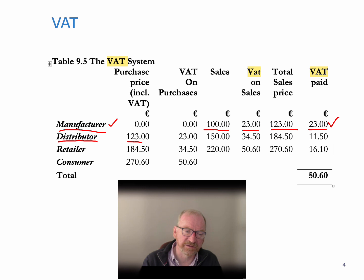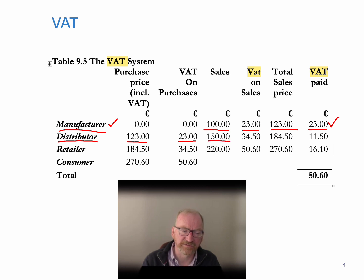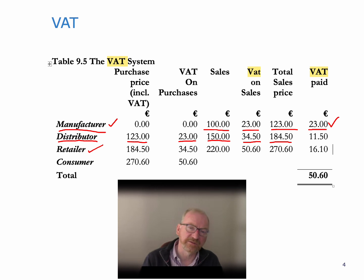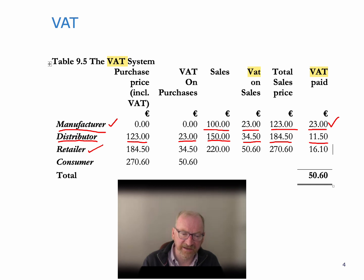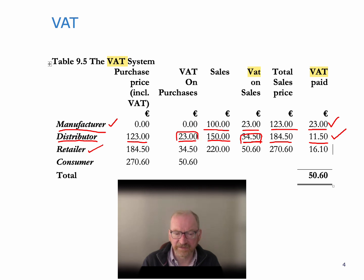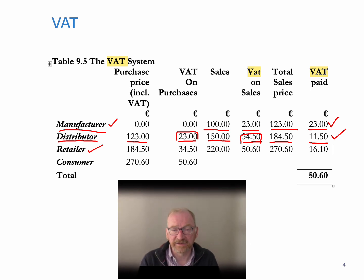The goods move to the distributor and they cost the distributor €123, with €23 of VAT included in that €123. The distributor sells the goods onwards for €150 to the retailer. The VAT on that is going to be €34.50, which is 23% of €150. The total sales price is going to be €184.50, which includes a profit margin for the distributor and also includes some VAT. The amount of VAT payable in this case is only €11.50, because it is the difference between the €34.50 and the €23 — that is, €34.50 minus €23 equals €11.50. They pay over the difference between the VAT on their sales minus the VAT on their purchases.